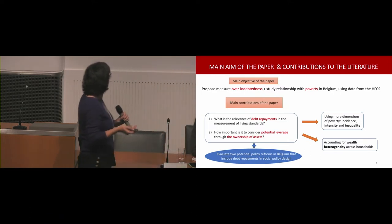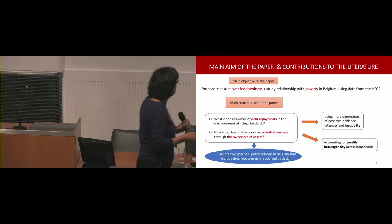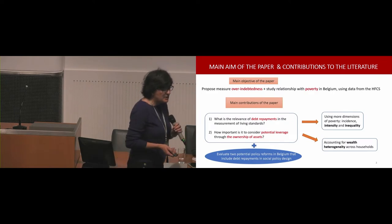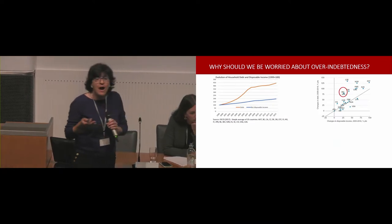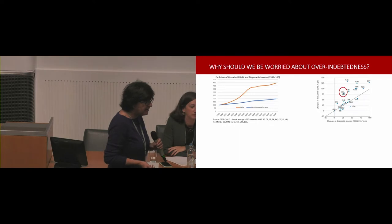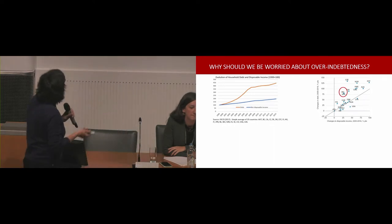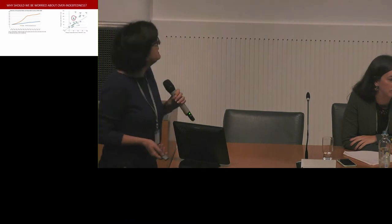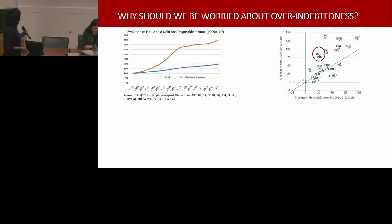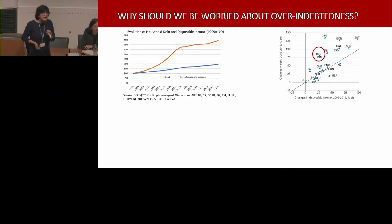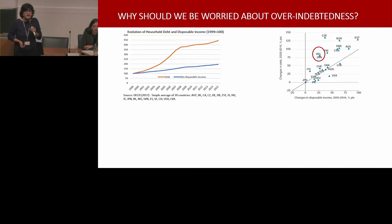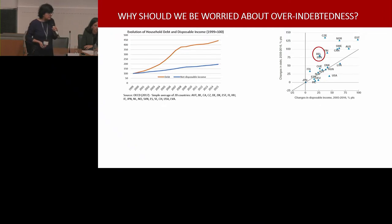The authors also evaluate two potential policy reforms, but I will focus very little on that — I don't have the time today. I will essentially try to show you why we should be worried about over-indebtedness in developed countries. What you can see here is a simple average of the OECD 2017 report on 20 developed countries, where the evolution of household debt has basically doubled the evolution of disposable income — essentially a 4.5 times increase since 1999 up to 2015 or 2016.